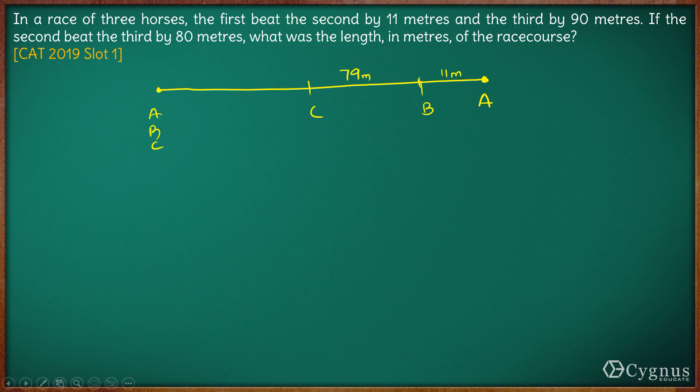Now what happens is by the time B finishes the race, B beats the third by 80 meters. So by the time B finishes the race, C is 80 meters behind. C is at this point and this distance is 80 meters.